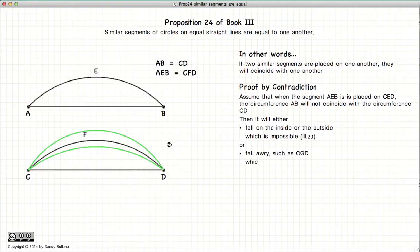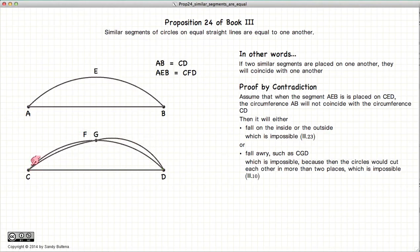The only other option is if our circle segment sort of lies a little bit screwy. And if this were the case, then if we completed these two circle segments, or draw the circle associated with these two circle segments, we would have two circles intersecting or cutting each other in more than two places. In other words, at C, G, and D. And we know from Proposition 10 of Book 3 that two circles cannot cut each other in more than two places. This is three, so this simply cannot be.